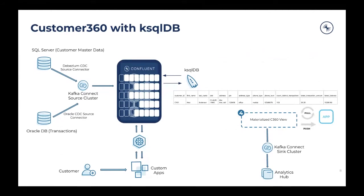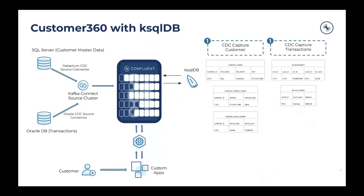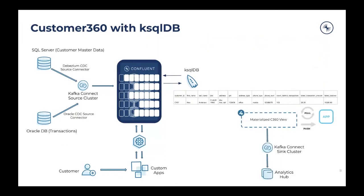From all these tables mapped from the source, we combine them to build the customer 360 view. We build logic that stitches together data from all these different tables, producing computed values like latest balance, latest transaction amount, and the number of transactions the customer has made within that day or week.